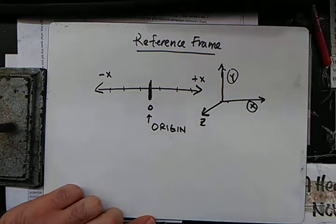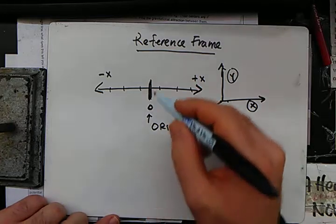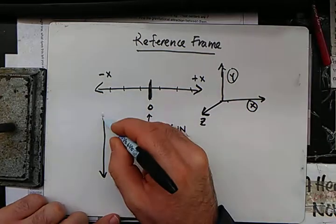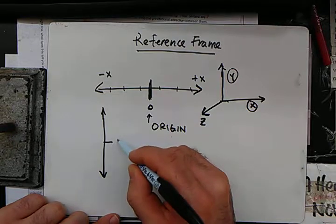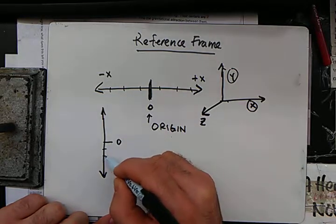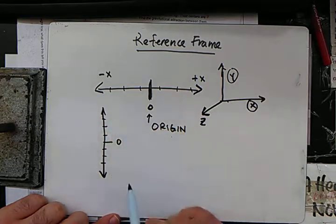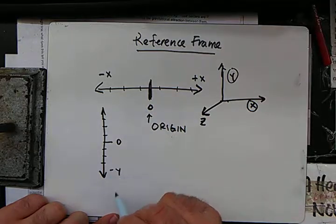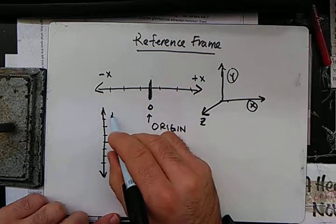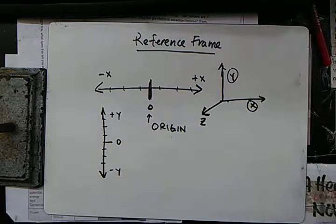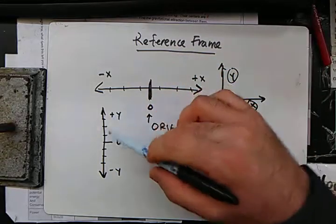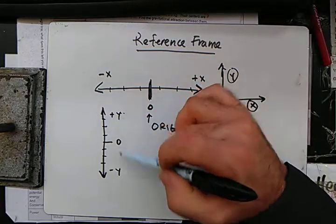So let's look at y now. Here's a number line. Here's the origin. Again, it doesn't have to be drawn perfectly. We're going to call down negative and up positive. We're going to call this y positive and y negative.